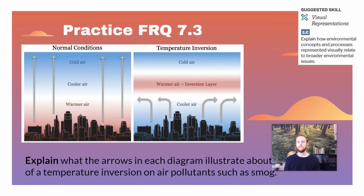For practice FRQ 7.3 today, take a look at the diagram showing normal conditions on the left and a temperature or thermal inversion on the right. Explain what these arrows indicate about how temperature inversions impact air pollutants such as smog.